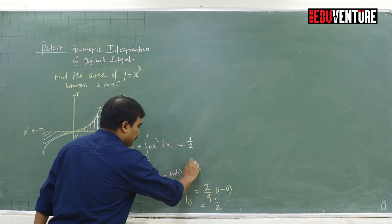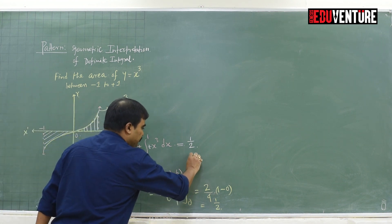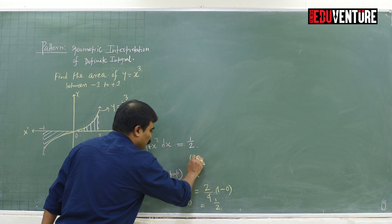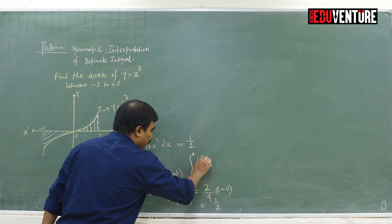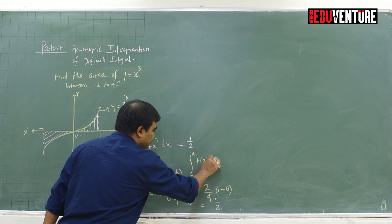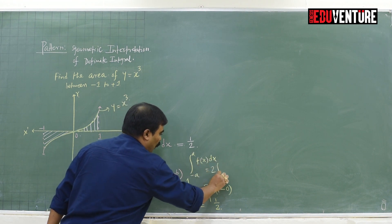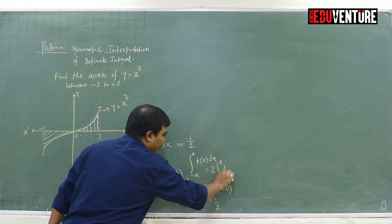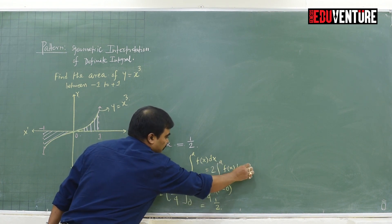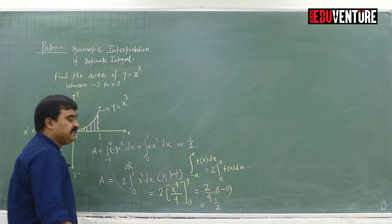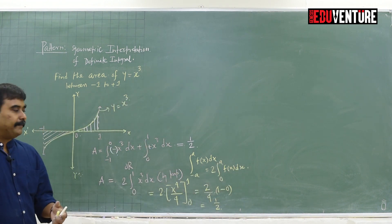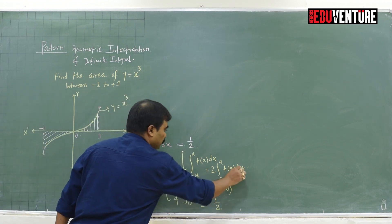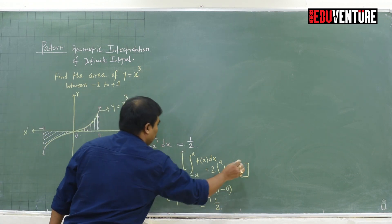This comes from the property that ∫(-a to a) f(x) dx = 2∫(0 to a) f(x) dx. We will discuss this in an upcoming lecture, but I am using this property here.